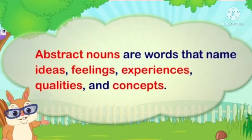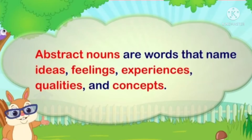Abstract noun क्या होते हैं बेटा? Abstract का मतलब है feel करना. जो चीजें हम feel कर सकते हैं, जिनको हम touch नहीं कर सकते, जिनको हम सिर्फ महसूस कर सकते हैं, ना तो उनको देख सकते हैं — जैसे ideas होते हैं, feelings होती हैं, experiences होते हैं किसी भी काम के, किसी बात के, qualities होती हैं, concepts होते हैं. ये चीजें इनको हम सिर्फ feel कर सकते हैं, महसूस कर सकते हैं. That are called abstract noun.